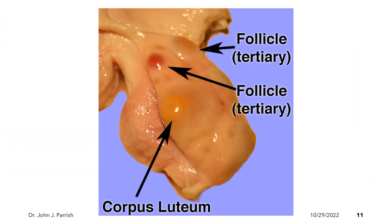This is the ovary of a cow. In this ovary, we have the presence of the corpus luteum, or CL, and the tertiary follicles. The function of the follicles is to produce oocytes and the hormone estrogen. The function of the corpus luteum is the production of progestins, or progesterone. The ovary in the cow is almond-shaped, or ellipsoidal.